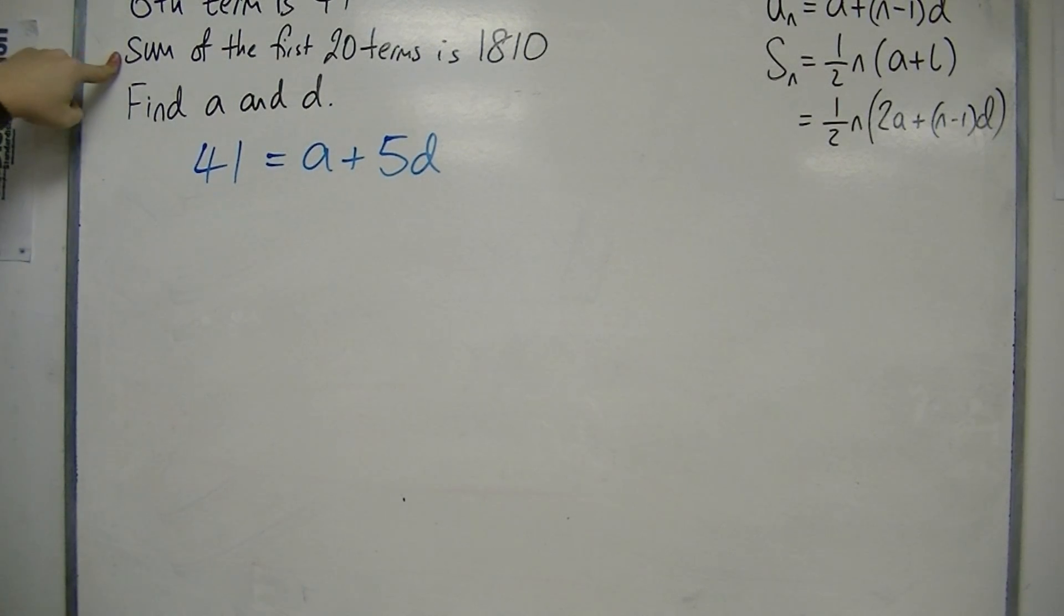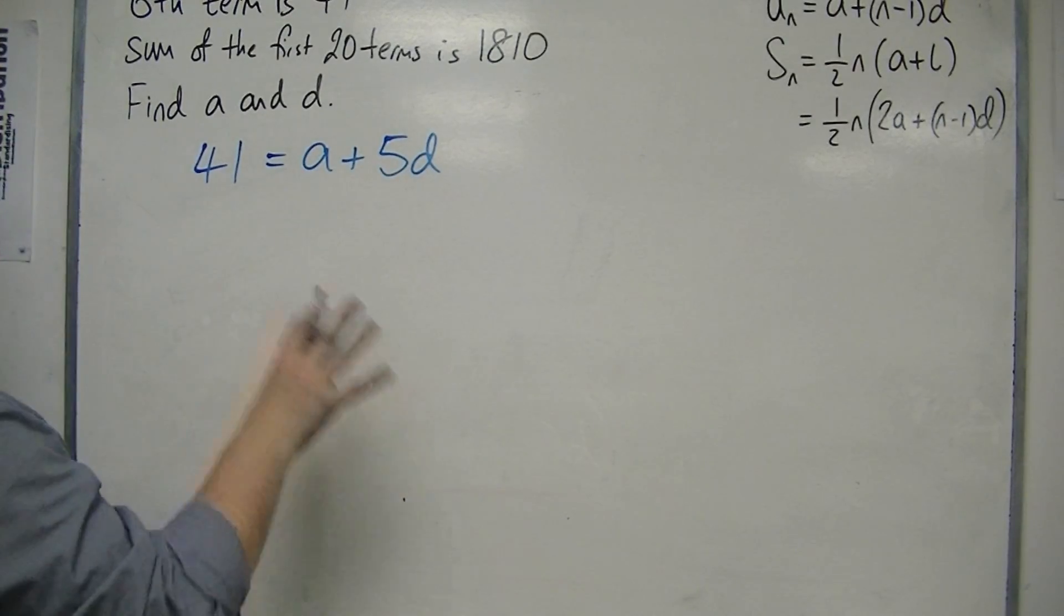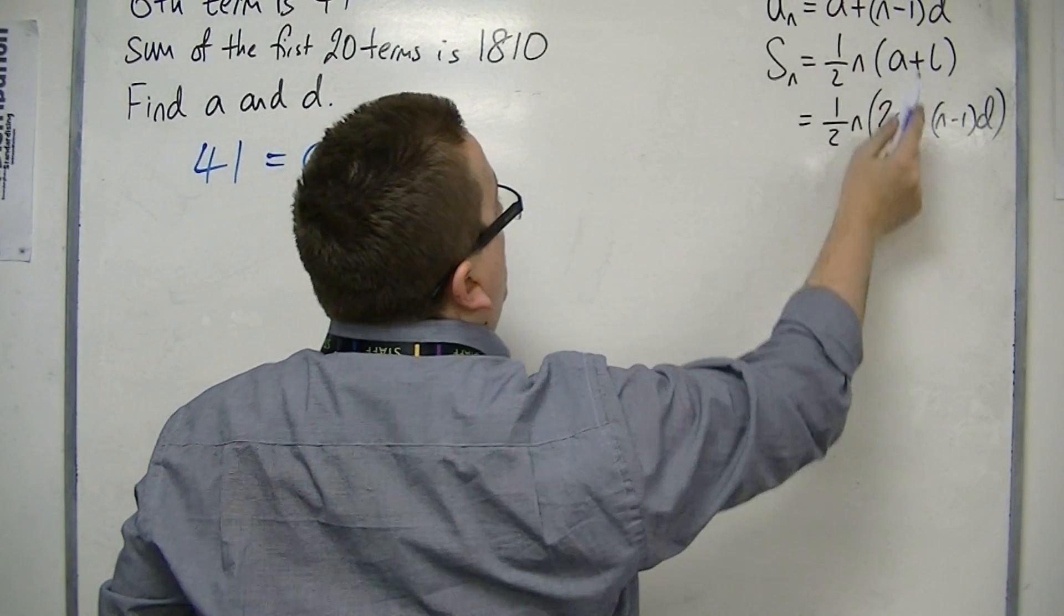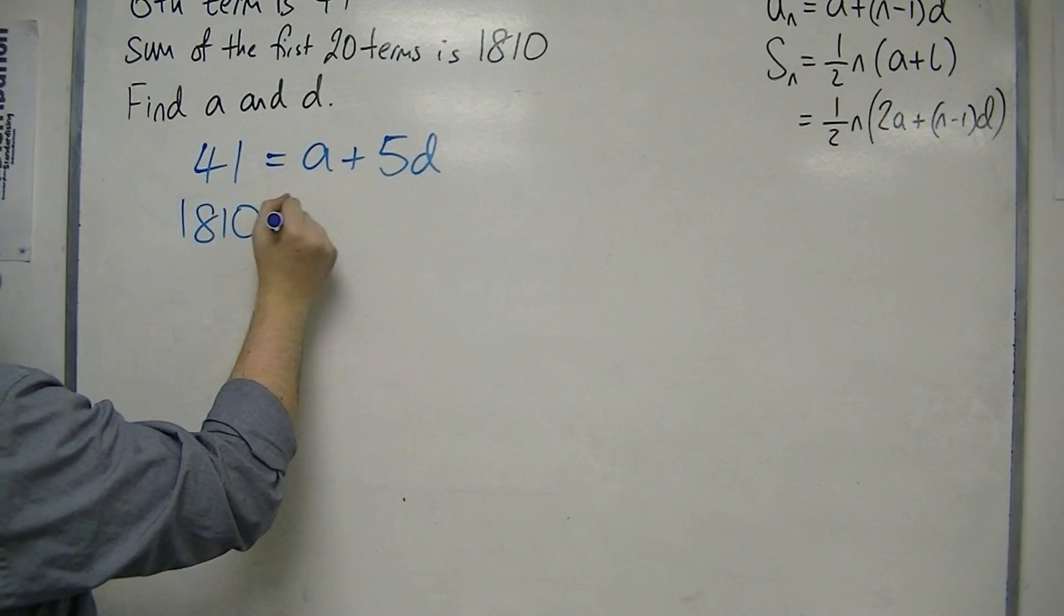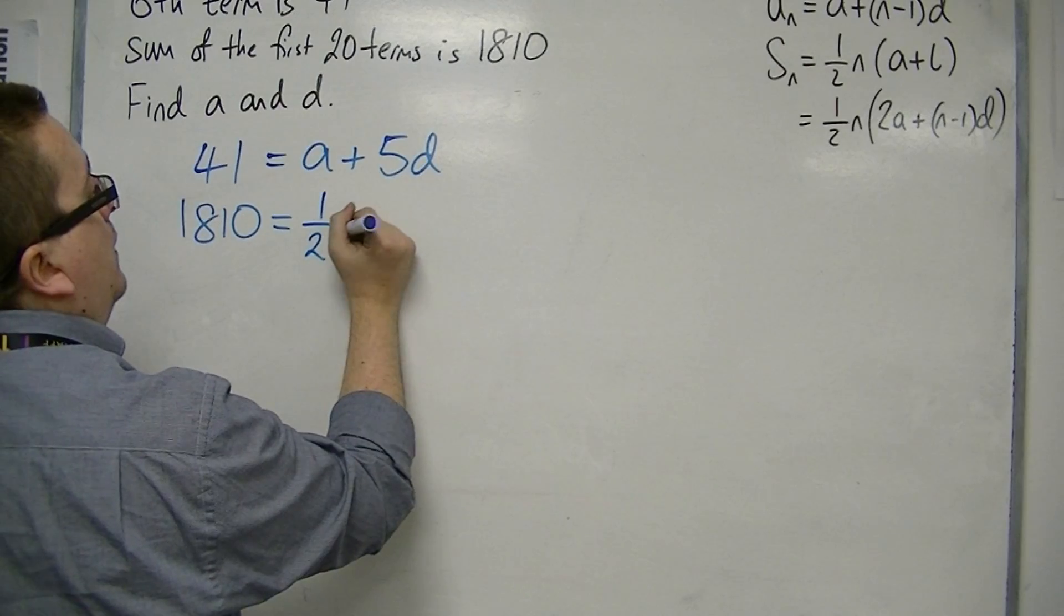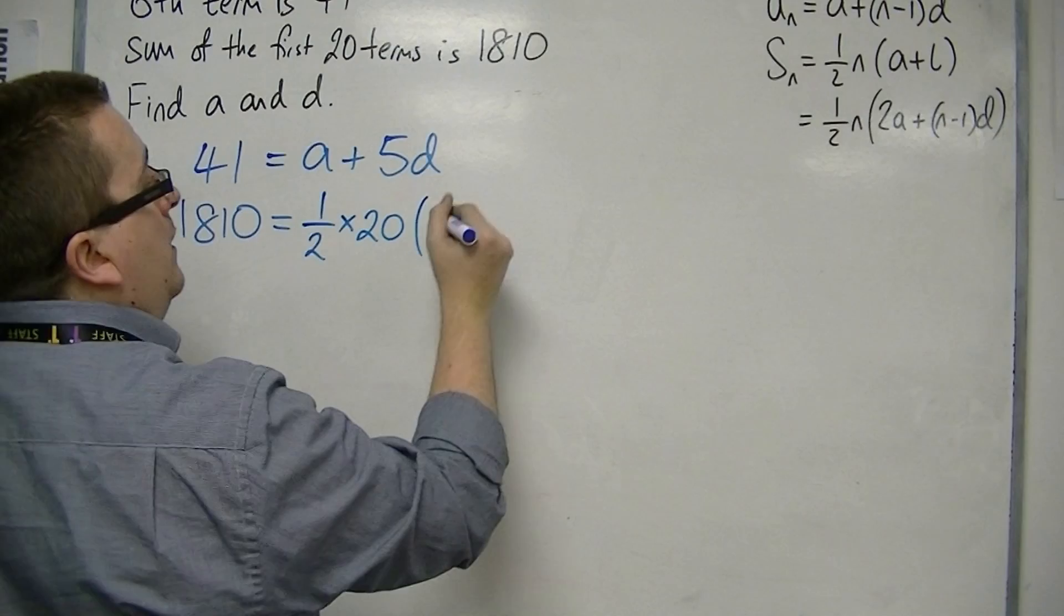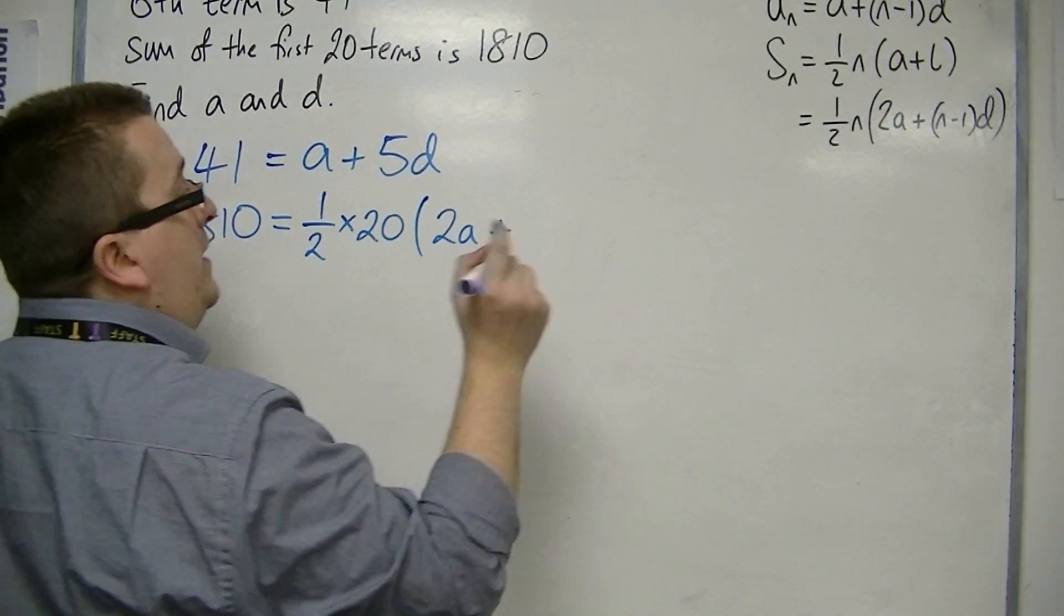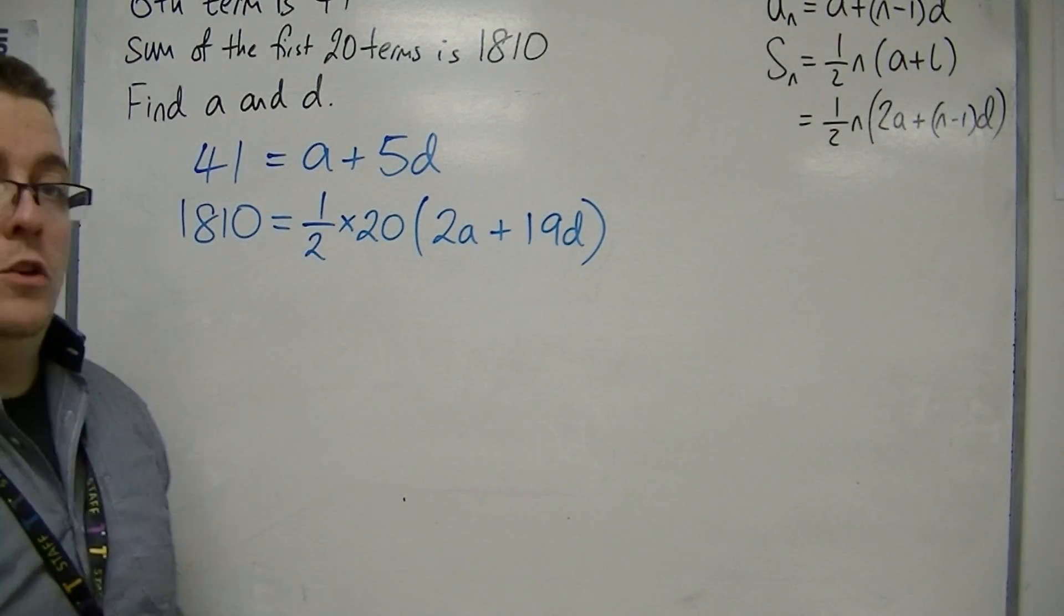The second bit of information says that the sum of the first 20 terms is 1810. So, because we want A and D, I'm going to be using this formula rather than that one. So, 1810, the first 20 terms is equal to one-half times 20, because N is 20, times 2A plus N minus 1D. Well, N is 20, so that's 19D. So, that's my second equation.